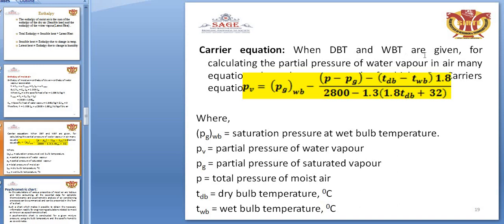When DBT and WBT are given, we use the Carrier equation to calculate the partial pressure of water vapor: P_V = P_G(wb) minus (P minus P_G(wb)) times (T_db minus T_wb) times 1.8 divided by 2800 minus 1.3 times (1.8 × T_db + 32). Here P_G(wb) is the saturation pressure at wet bulb temperature, P_V is the partial pressure of water vapor, P is total pressure, T_db is dry bulb temperature, and T_wb is wet bulb temperature.